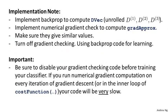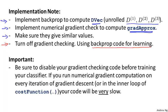Finally, here's how to implement numerical gradient checking. First, implement backpropagation to compute dvec — the unrolled version of the derivative matrices. Then implement numerical gradient checking to compute gradaprox. Make sure that dvec and gradaprox give similar values, up to a few decimal places. And finally — this is the important step — before you start using your code for learning and seriously training your network, it's important to turn off gradient checking and no longer compute gradaprox using the numerical derivative formulas.